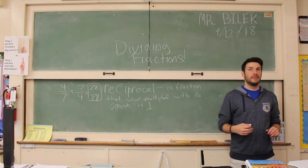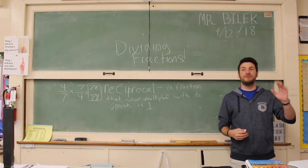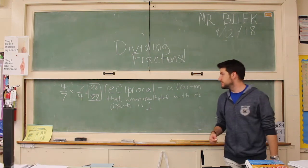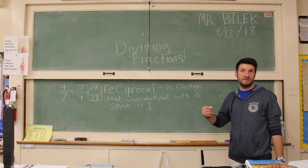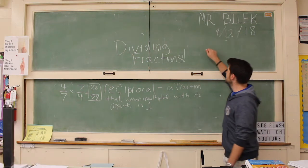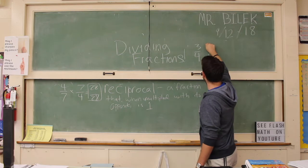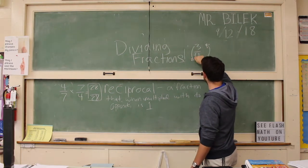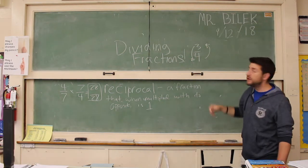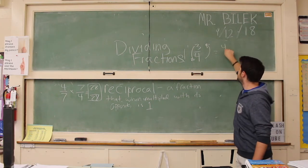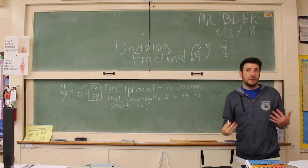So a reciprocal is simply taking that fraction and flipping it upside down. The reciprocal of 1 half would be 2 over 1, the reciprocal of 5 fourths would be 4 fifths. It's simply taking a fraction like 3 fourths and reversing it. The reciprocal of 3 fourths, of course, is 4 thirds.